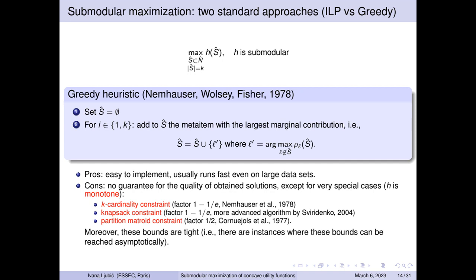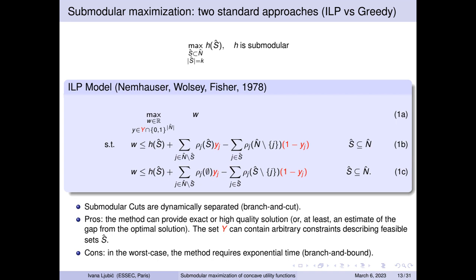We wanted to combine the best of both worlds. We can always initialize the branch-and-cut solver with the greedy solution as a feasible starting point. More importantly, we wanted to exploit the specific structure of our objective — a composition of a concave increasing utility function with a set union operator — rather than using the generic submodular cut formulation. We also note that submodular cuts are known to not be very strong, which is why OR researchers have tried to lift their coefficients to provide stronger cuts.